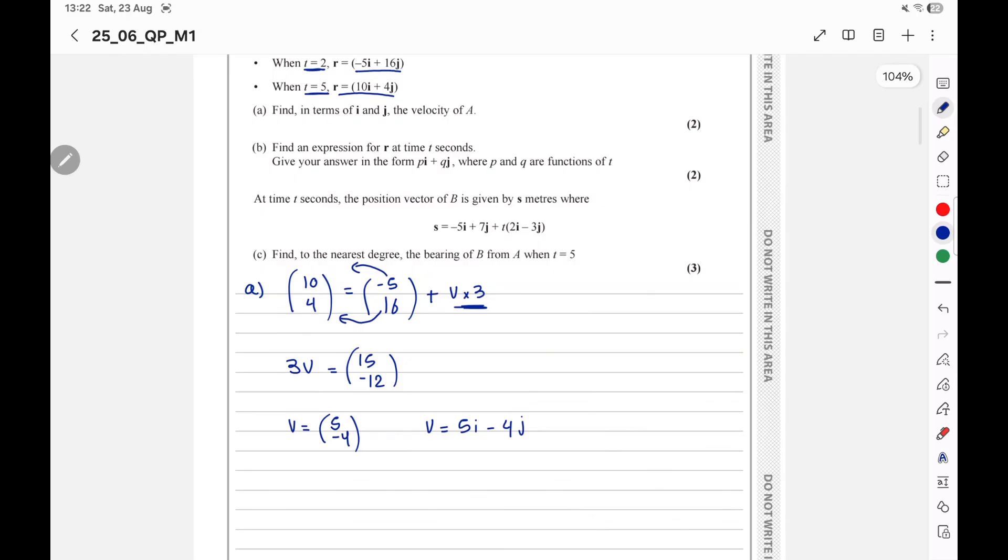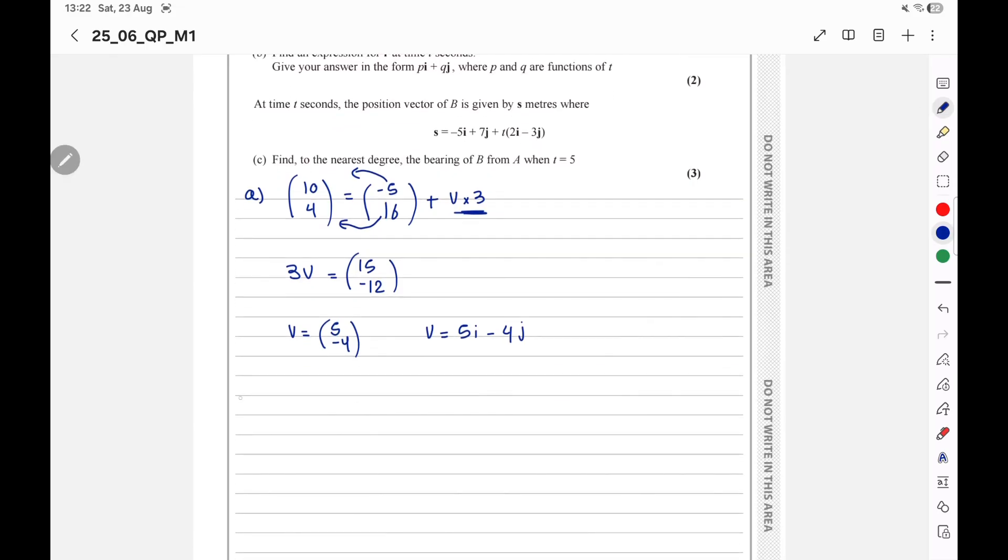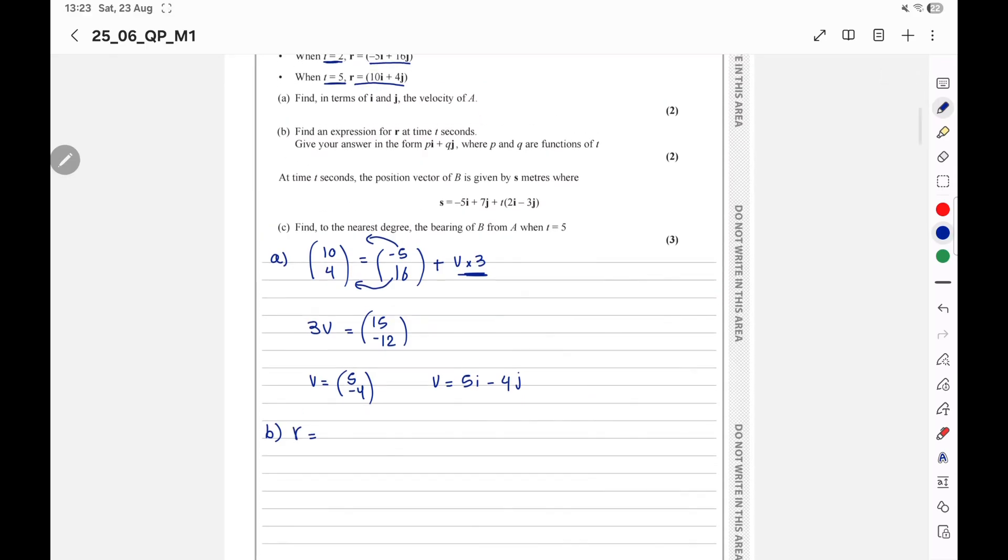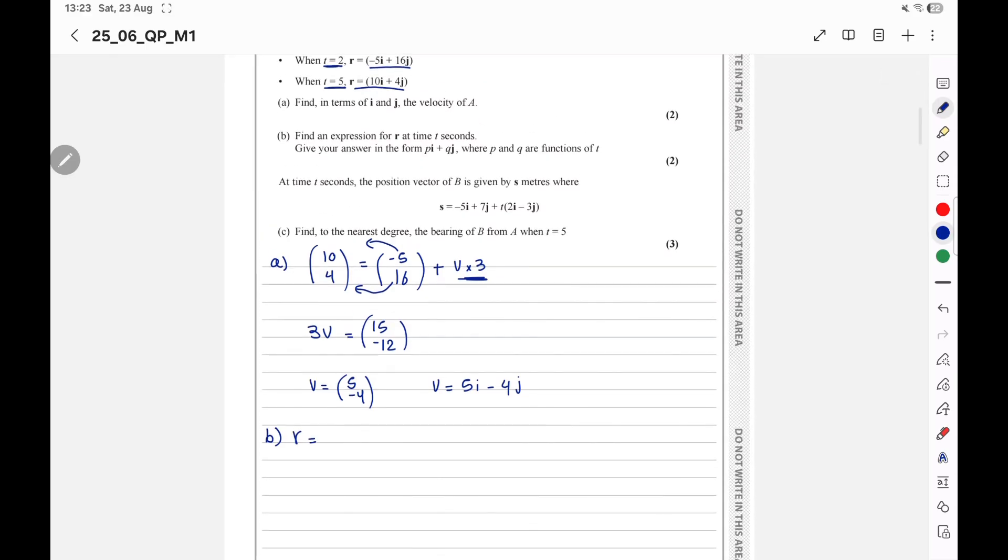Part B, find an expression for R at time t seconds. Give your answer in the form Pi plus Qj, where P and Q are functions of t. He wants us to find position R in terms of t. We'll substitute in the same rule. Part B, R equal R node plus Vt. R node is the position at time t equals 0. But I don't have the position at time t equals 0. So first, we will have to calculate the position at time t equals 0.